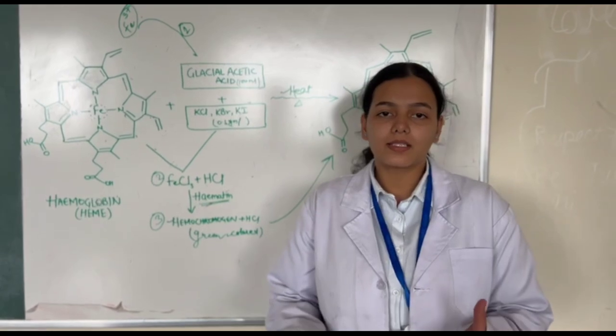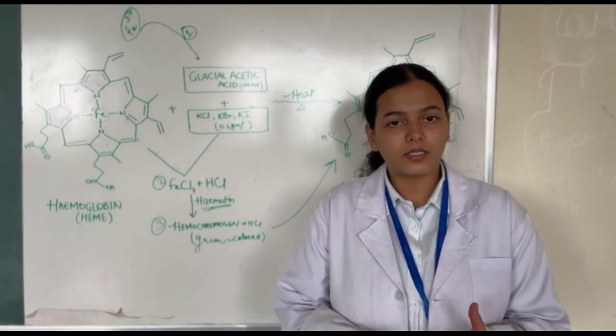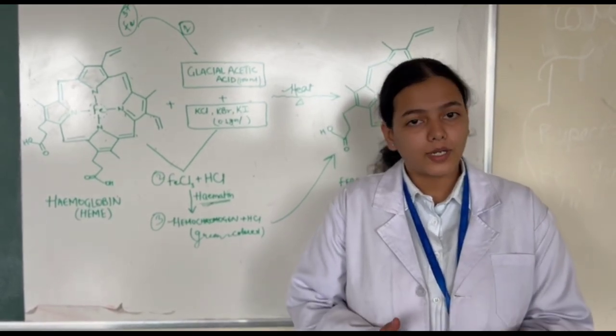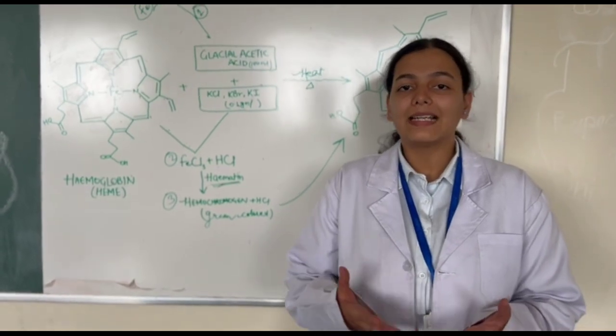What is the Teichmann reagent? The Teichmann reagent is a mixture of salts, particularly potassium chloride, potassium bromide, and potassium iodide, which are suspended in glacial acetic acid.